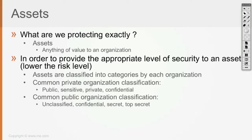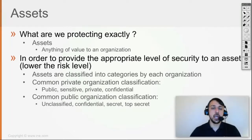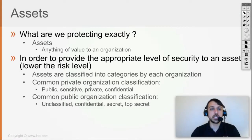Common private organizations classify their assets into specific categories like public, sensitive, private, and confidential. For example, an asset classified as public means it's a publicly available resource — like data which resides on a company's website, which is going to be classified as public because it is publicly available.